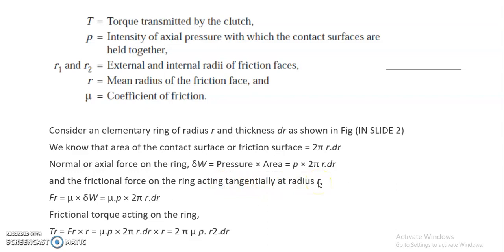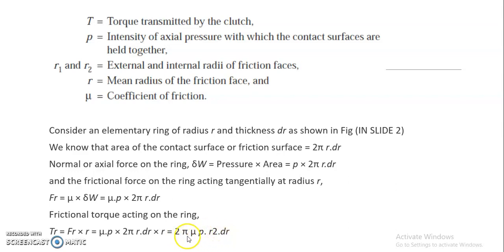The frictional force on the ring tangentially at radius r, denoted by F_R, is mu times the normal reaction. Substituting the formula for δW, we get F_R = mu × P × 2πr·dr. Finally, the frictional torque acting on the ring — using torque = force × perpendicular distance — gives us 2πμP·r²·dr, where mu is the coefficient of friction, P is the intensity of axial pressure, r is the mean radius, and dr is the thickness of the elemental area.